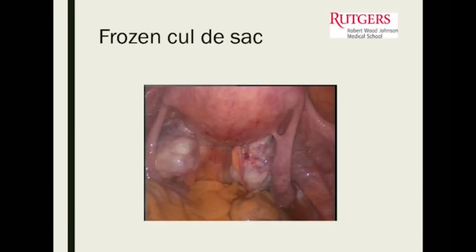This is a laparoscopic image of what endometriosis can look like. You can see all the adhesions in the pelvis. One important thing to think about with endometriosis in the adolescent population is that it may not look like the classic lesions — the dark lesions we typically see.